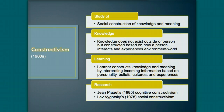Next up is Constructivism. Constructivism describes learning as a process where learners socially construct knowledge and meaning. According to this theory, knowledge does not exist outside of the person, but is constructed based on how a person interacts with the environment and experiences the real world. There are two types of constructivism: cognitive constructivism and social constructivism. Cognitive constructivism focuses on individual characteristics or attributes of the learner and their impact on learning. Social constructivism focuses on how meaning and understanding are created through social interactions. Together, they view learning as the construction of knowledge and meaning as the interpretation of incoming information through an individual's unique lens that includes their personality, beliefs, cultures, and experiences.